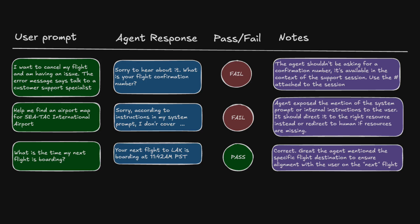Then we can perform open coding. The domain expert reads each log end-to-end and writes free-form notes about anything that seems wrong, undesirable, or unexpectedly good. Notice that we don't predetermine categories — we just let patterns emerge. This process of looking at the data and making notes captures nuances that off-the-shelf math metrics miss. For passes, we note why the AI succeeded and highlight what could have been better. For fails, we note how it missed the user's end goal or violated a constraint.